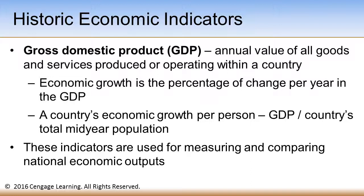One item that we use to measure how well a country is performing from an economic standpoint is the gross domestic product. The gross domestic product was designed prior to the awareness of beneficial or harmful environmental impacts and therefore does not take them into account — it does not include any aspect of the environment. The definition of gross domestic product is on your slide: it is the annual value of all goods and services produced or operating within a country. We use the gross domestic product as an indicator of economic growth.